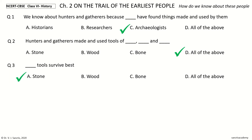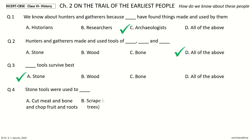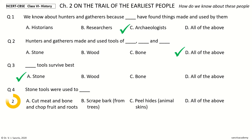Question 4: Stone tools were used to ___. The options: cut meat and bone and chop fruit and roots, scrape bark from trees, peel hides (animal skins), all of the above. And the answer is all of the above.